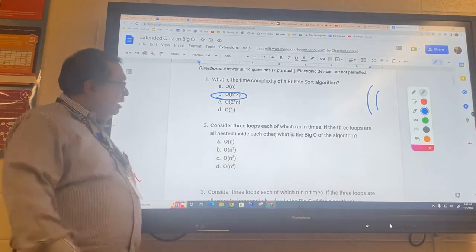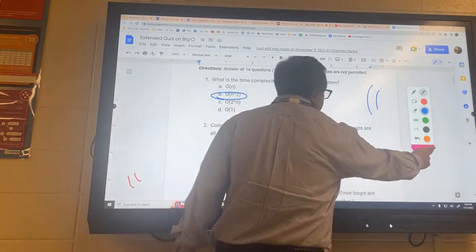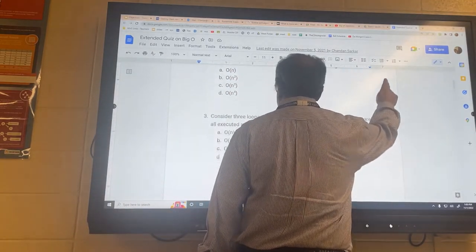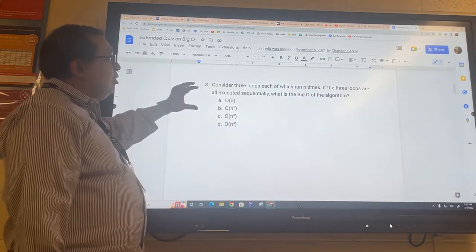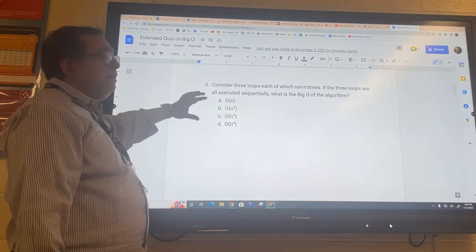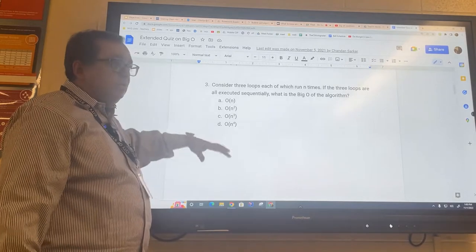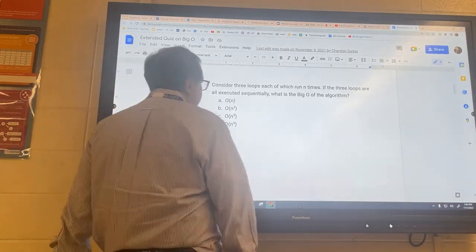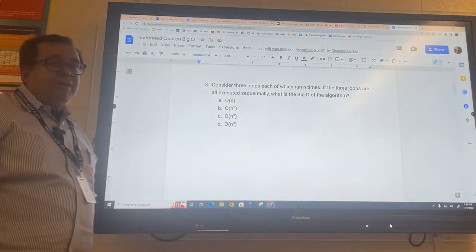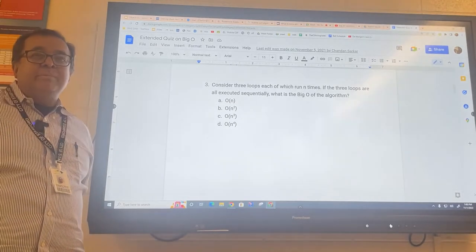n cubed. So now we're going to move on to the other ones. Now we have three loops, they're all dependent on n, but they're in series. That means that there's one loop, another loop, and another loop. They're not connected in any way. So when that happens, what would be the Big O of the resulting algorithm, Mr. Ben?